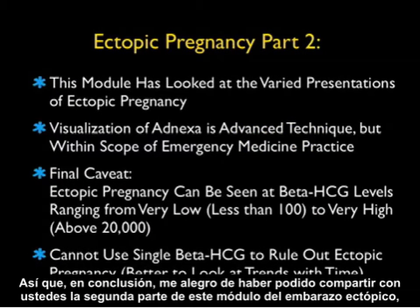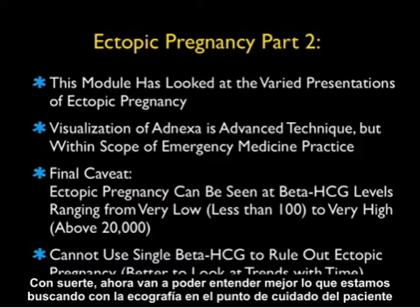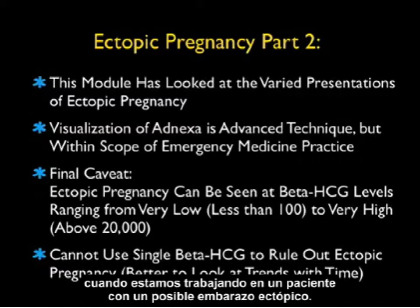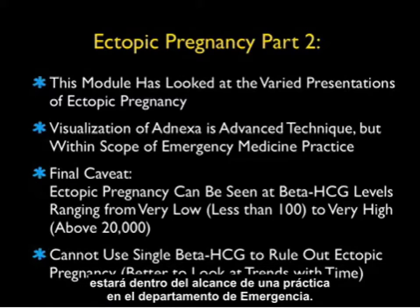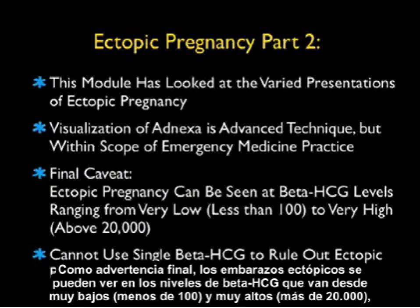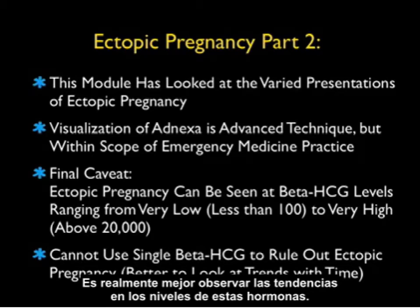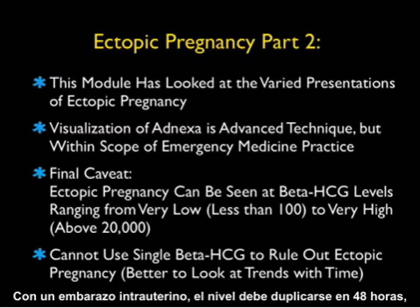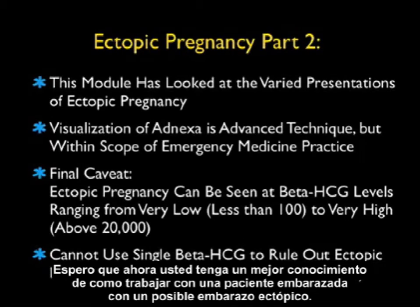In conclusion, this module on ectopic pregnancy part two covered the varied presentations of ectopic pregnancy. Hopefully you better understand what we're searching for on bedside sonography when working up a patient with possible ectopic pregnancy. While visualization of the adnexa and fallopian tubes is an advanced technique, it is well within the scope of a busy emergency medicine practice. As a final caveat, ectopic pregnancies can be seen at beta-HCG levels ranging from very low — less than 100 — to very high — above 20,000 — and thus we cannot use a single beta-HCG level to rule out ectopic pregnancy. It's better to look at trends in this hormone level over time. With an intrauterine pregnancy the level should double in 48 hours, whereas in most ectopic pregnancies it will not climb to the same degree.